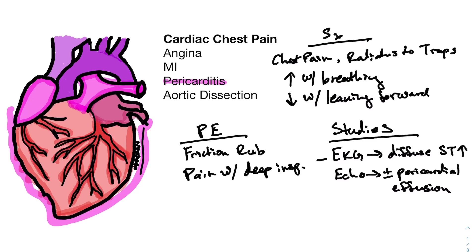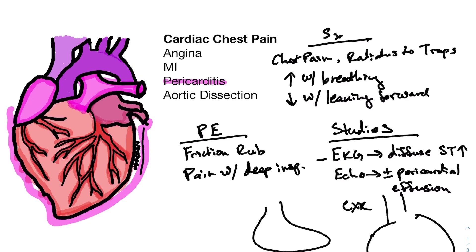For pericarditis, if you get a chest X-ray, a lot of times you won't see anything unless you have a tamponade situation. With tamponade, you'll see this water bottle type picture of the heart, because the fluid around the heart inside the pericardium causes that balloon-like structure. But for the most part, you won't really see anything on X-ray.